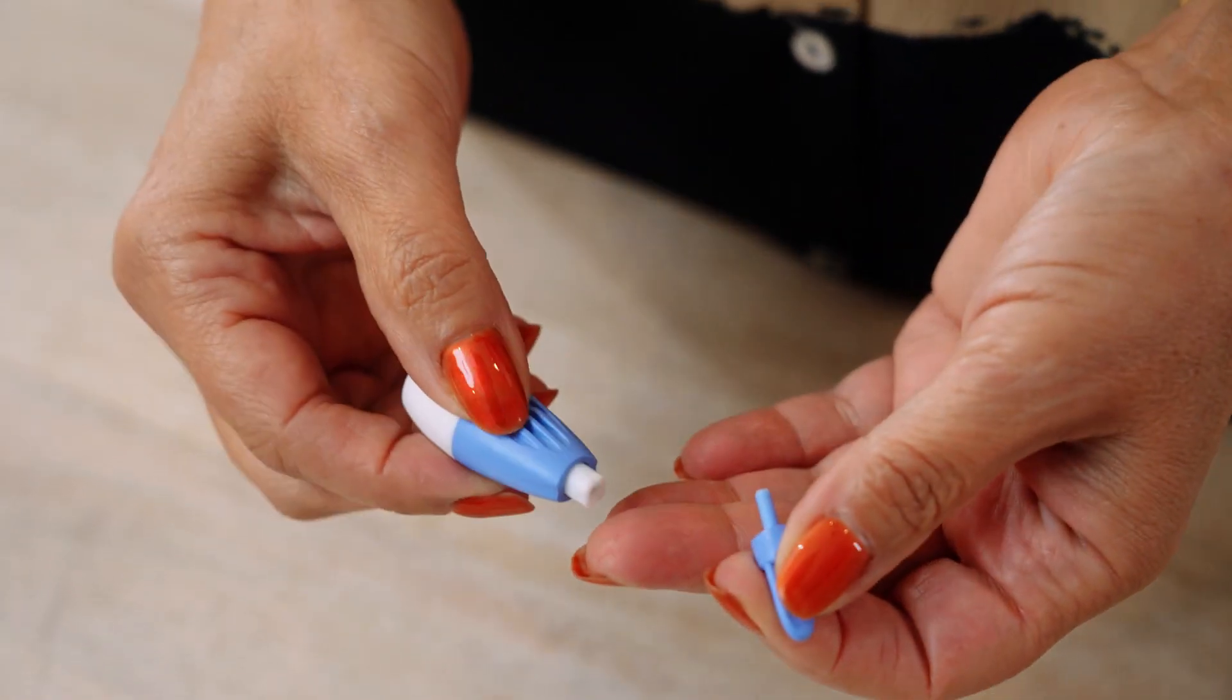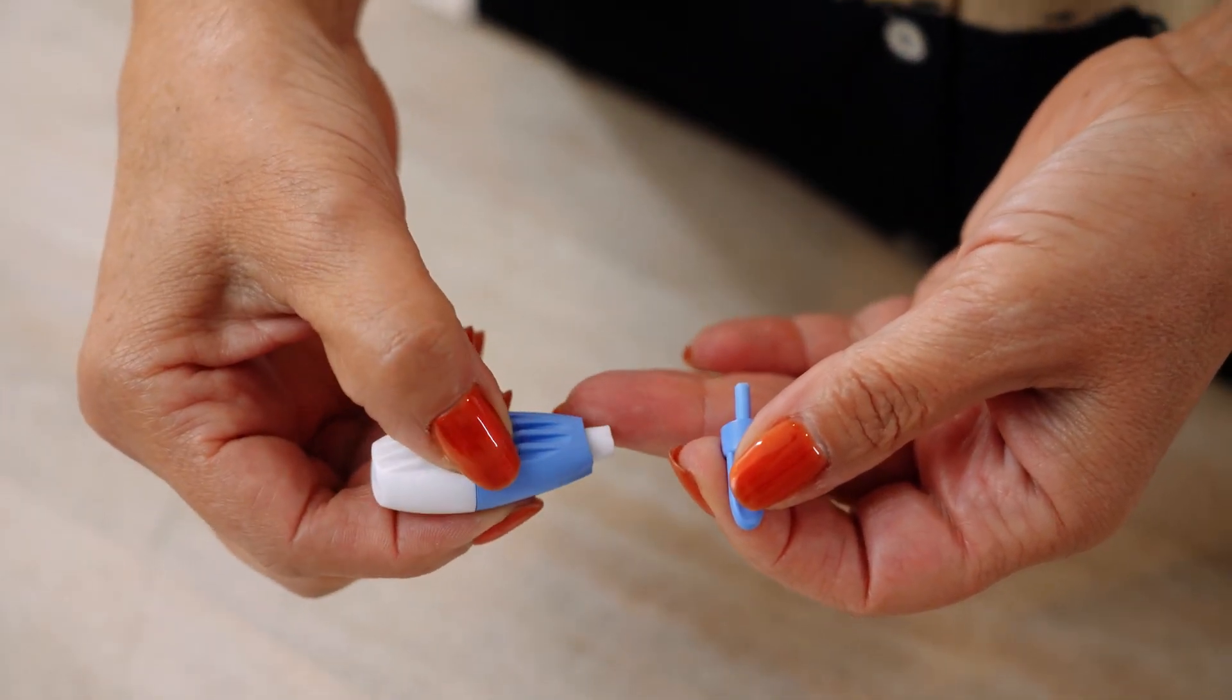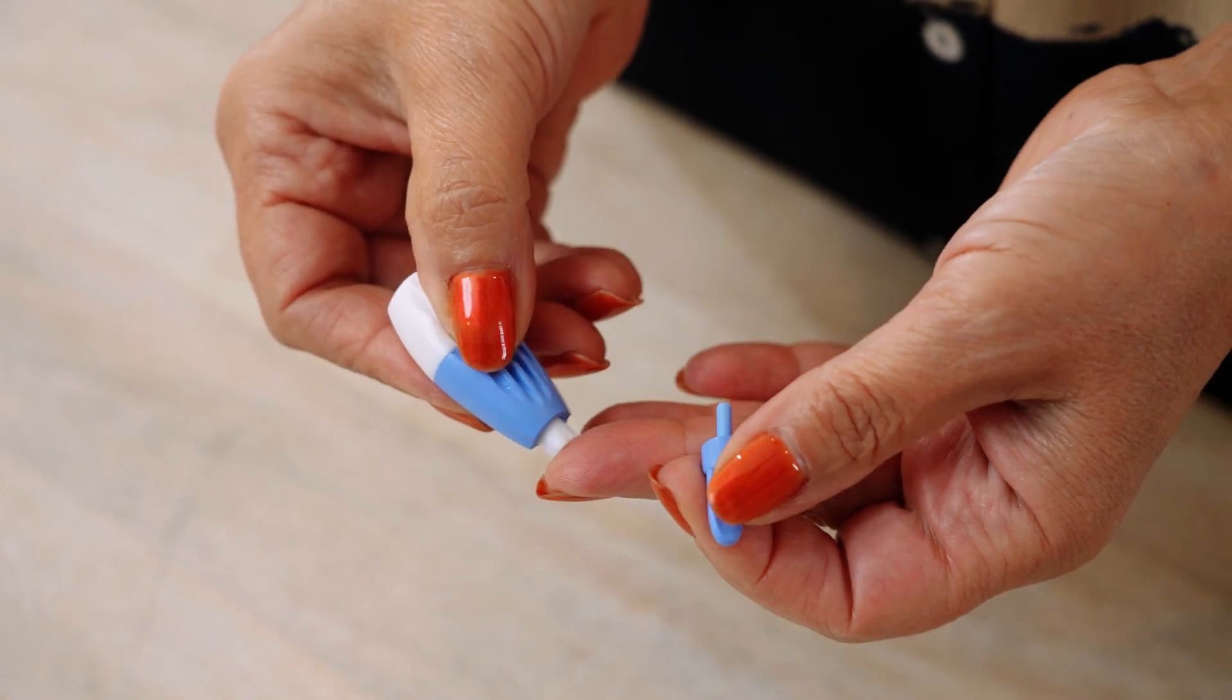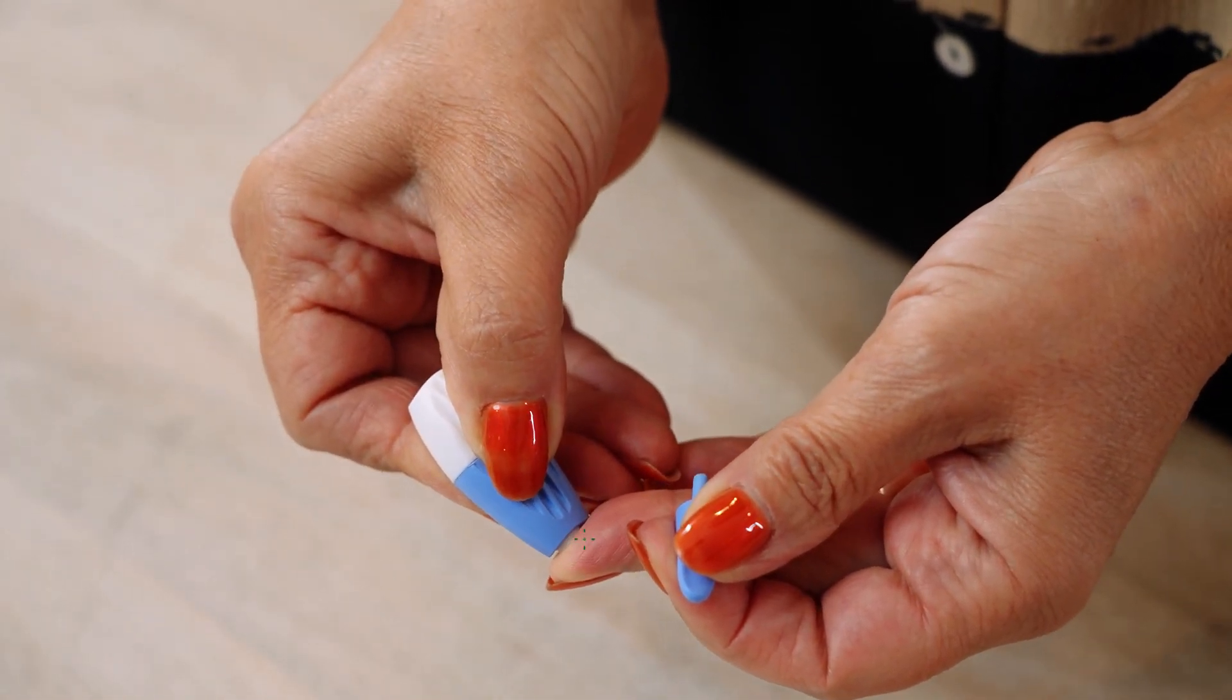Twist off the lancet tip and firmly place the white end against either side of your clean fingertip. Press the lancet until it clicks, which will gently puncture your fingertip.